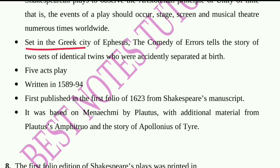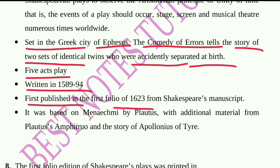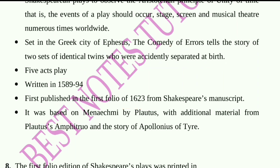Set in the Greek city of Ephesus, The Comedy of Errors tells the story of two sets of identical twins accidentally separated at birth. It is a five-act play written in 1589–94, first published in the First Folio of 1623. It was based on Menaechmi by Plautus, with additional material from Plautus's Amphitryon and the story of Apollonius of Tyre.